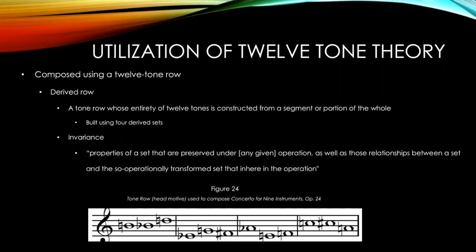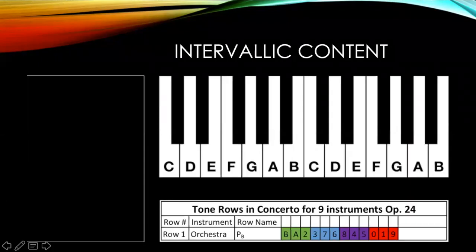Interestingly, Webern's utilization of set theory is interwoven with his use of 12-tone theory. This piece was composed using a 12-tone row, and this particular row is rather unique as it's a derived row—a tone row whose entirety is constructed from a segment or portion of the whole. This particular row is built using four derived sets, and this results in invariance, which essentially means that certain properties of a set or tone row are preserved under any operation or transformation. In this particular case, the intervallic content is the property that is preserved.